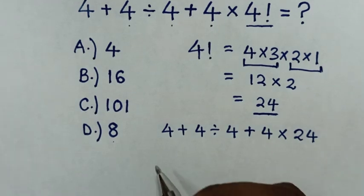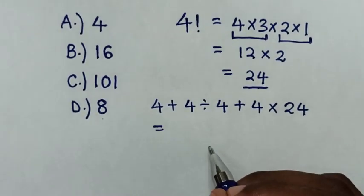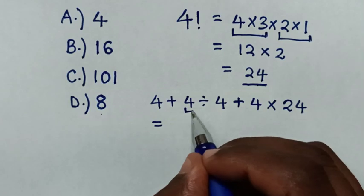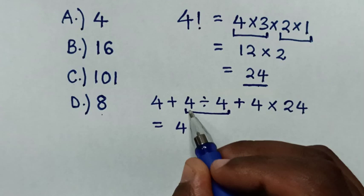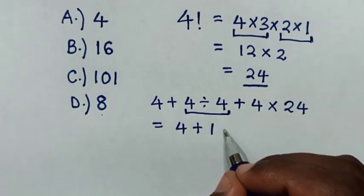Then our problem will be equal to, we start to deal with division of 4 divided by 4. So it will be 4, then plus, this divided by this is 1, then plus...